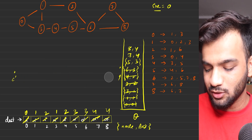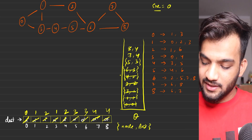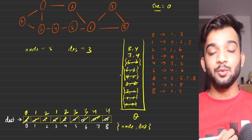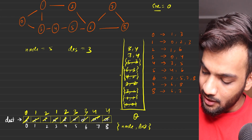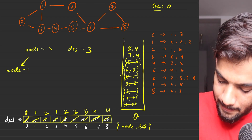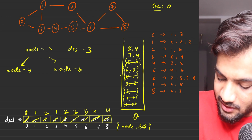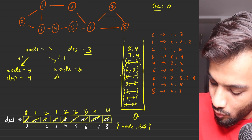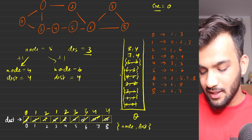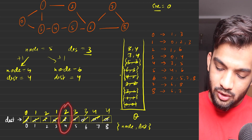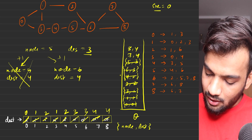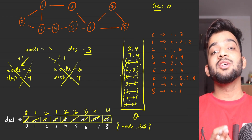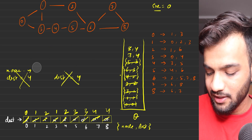Next is node five with distance three. Node five's adjacent nodes are four and six. Both would be reached at distance four. Node four was previously reached at two, so discarded. Node six was reached at three, so discarded. No new shorter distances are found.